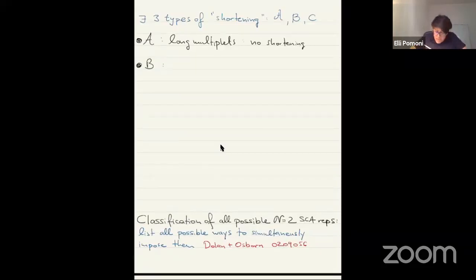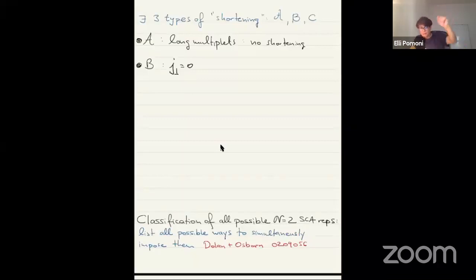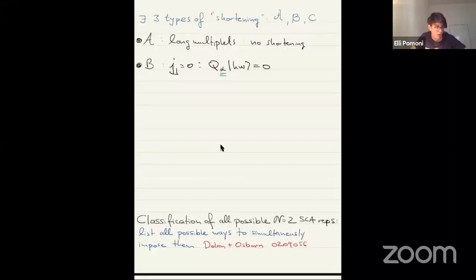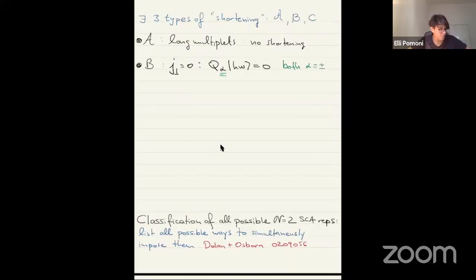With A we denote long multiplets — there is no shortening. Then we go to B type. B type can only apply if the highest weight state has zero spin, at least J1. So I act with L and get zero. If this is the case, I can act with a Q like this, where the index A-alpha is open. By looking at this you see there are two Q's, because I can do it with both alpha equal to plus and minus.